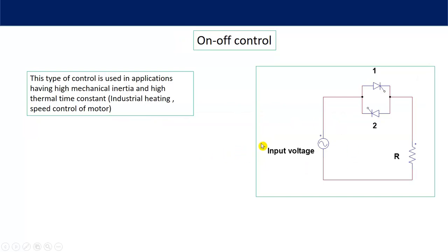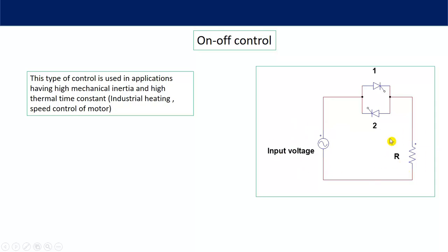Here you can see an AC input voltage is connected across a bi-directional switch and a load resistance. This is a bi-directional switch because when the input is at its positive half-cycle, thyristor number 1 will conduct. And when the input voltage is at its negative half-cycle, thyristor number 2 conducts. In on-off control, for some duration of time, complete cycles are allowed to appear across the load — meaning positive and negative half-cycles are not individually controlled. Then, the supply voltage is disconnected from the load by turning off both thyristors.